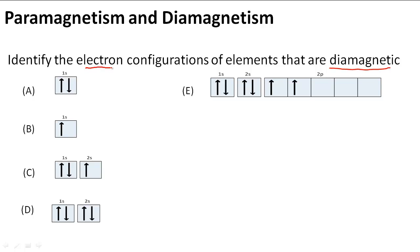We have to look at these electron configurations that are in orbital diagrams and figure out which one is diamagnetic and which one is paramagnetic. So we have to know the difference between the two.